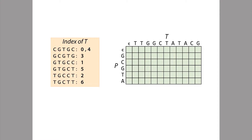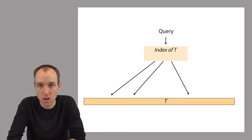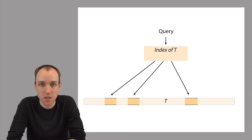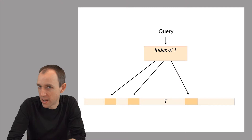The index allows us to rapidly home in on a small set of candidate locations in the genome where the pattern might have a good approximate match. Specifically, the index tells you a list of places in the genome that share a substring with our pattern string. So the index really acts almost like a filter — instead of searching for our needle in the entire haystack, it presents us with a small set of candidate locations that we only really have to look at carefully.